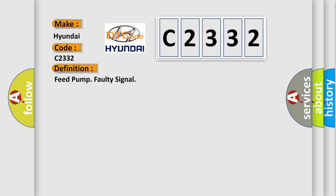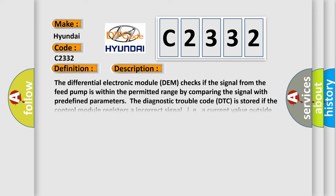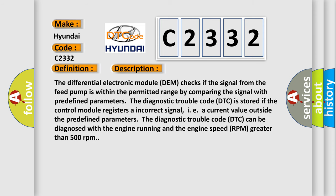The basic definition is, Feed pump faulty signal. And now this is a short description of this DTC code. The differential electronic module DEM checks if the signal from the feed pump is within the permitted range by comparing the signal with predefined parameters. The Diagnostic Trouble Code DTC is stored if the control module registers an incorrect signal, i.e. a current value outside the predefined parameters. The Diagnostic Trouble Code DTC can be diagnosed with the engine running and the engine speed RPM greater than 500 revolutions per minute.